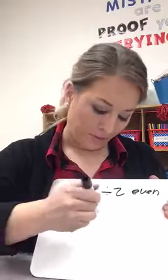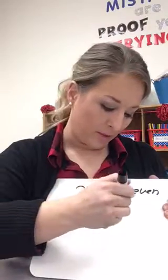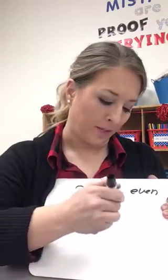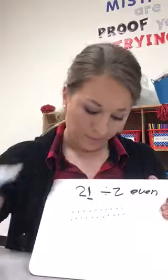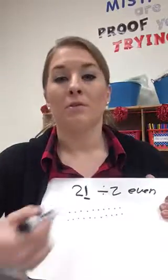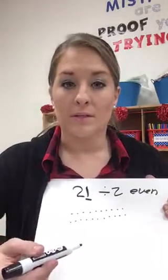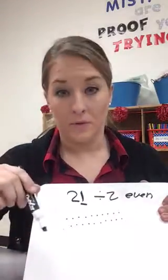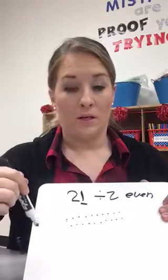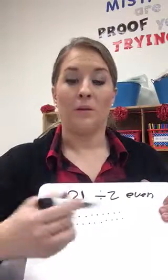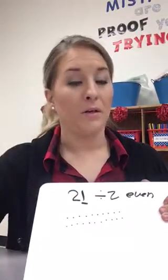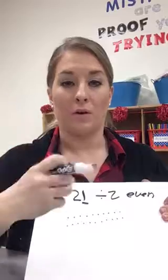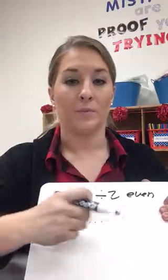1, 2, 3, 4, 5, 6, 7, 8, 9, 10, 11, 12, 13, 14, 15, 16, 17, 18, 19, 20, 21. So what we show them is if you can make a group of two, and then when you get to the end, if you have any left over, then it's odd. And if they're all completely in groups of two, then it's even.